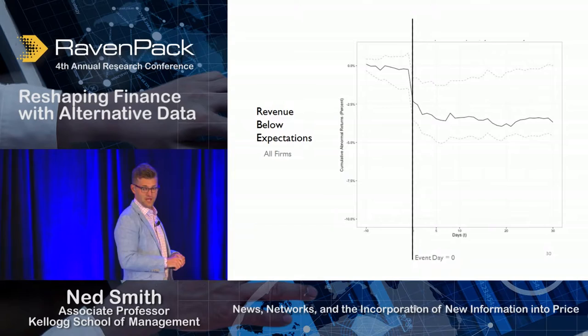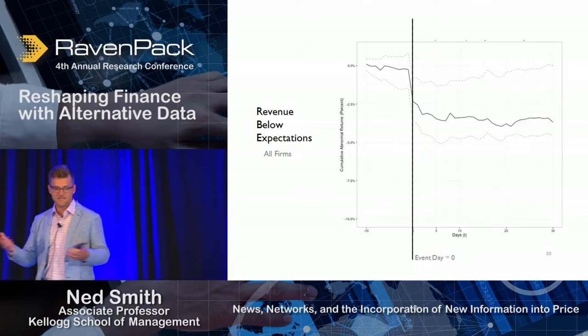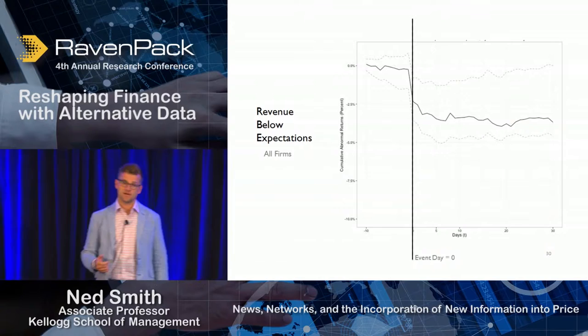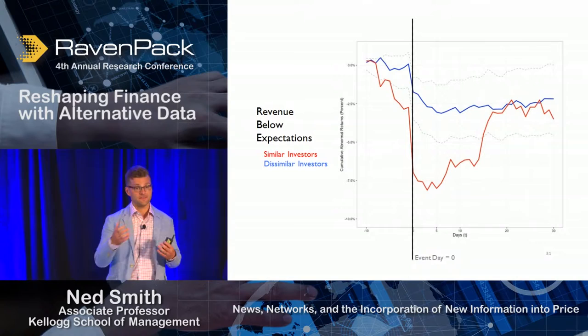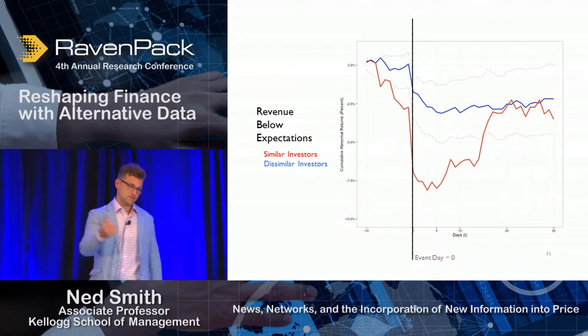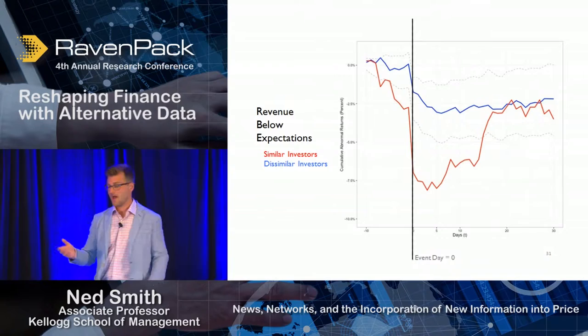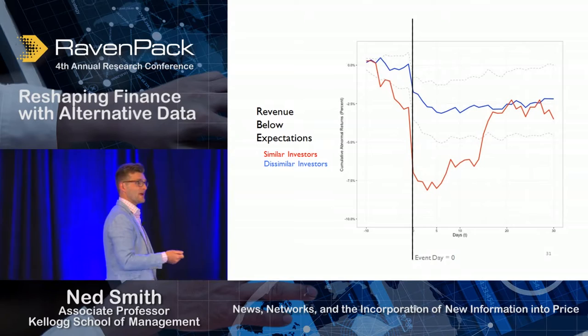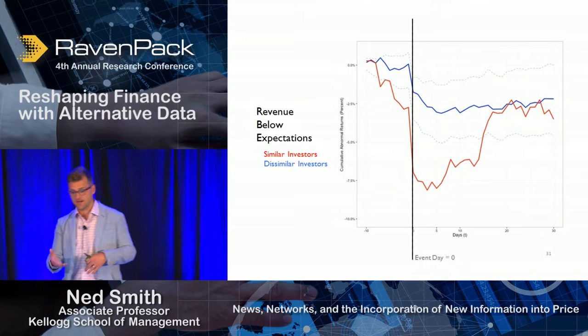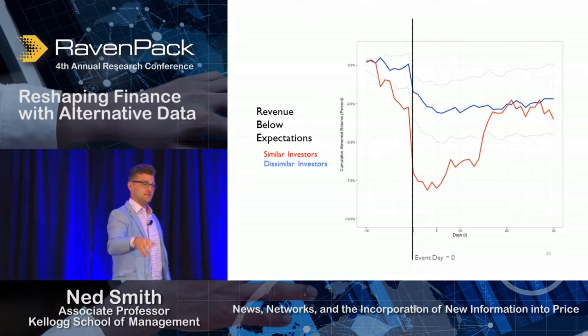The second example is revenue below expectations. This is all firms over a period of time, aggregating data — the same standard event model. As expected, we see a big negative market response in terms of cumulative abnormal returns right around that announcement. When we split again based on the firm's position within the ownership structure, firms that have revenue below expectations and have similar investors are having a much more pronounced negative response, and in this case we get drift.